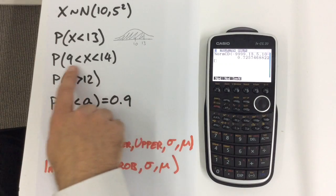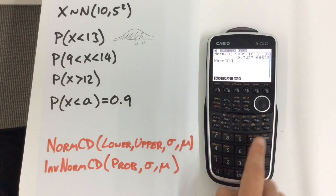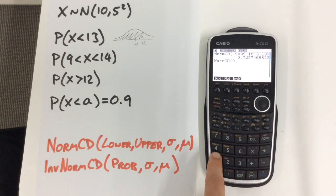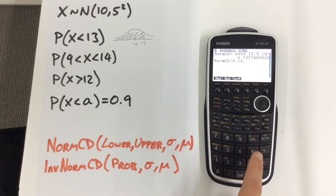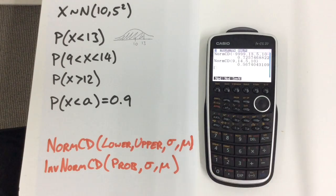If we're doing a question like this where we've got an upper and a lower bound, it's very simple. All we're going to do is put those two bounds in from 9 to 14, then put in our value of the standard deviation, our value of the mean, close off the bracket, and there's our probability calculated for us.